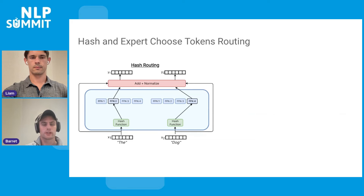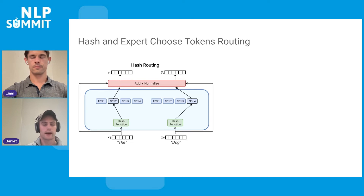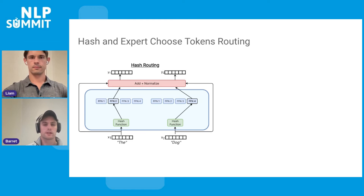Another interesting routing algorithm is hash routing, where instead of a learned routing mechanism, you simply have a hash function that takes in the token, hashes it based on the string, and sends it to the expert corresponding to that hash. This is an interesting proof of concept that these routing algorithms can work at all, because it's not learned and still achieves pretty good performance. There remain a lot of open questions about what exactly the routing algorithms are doing.